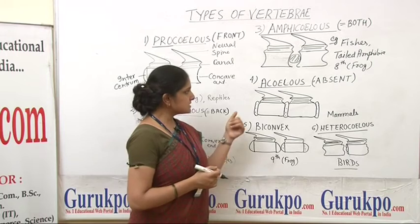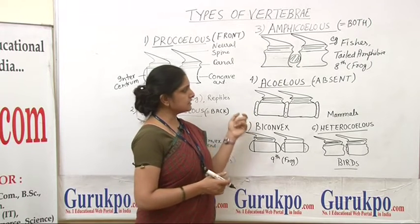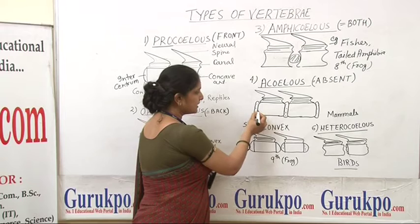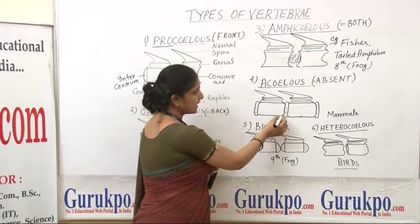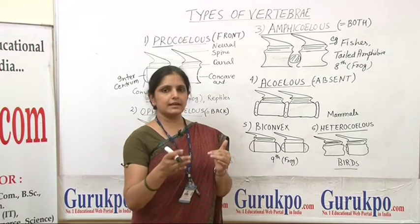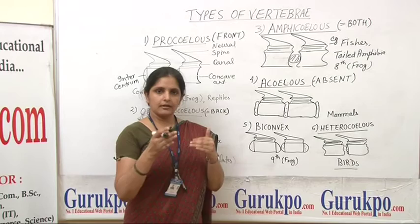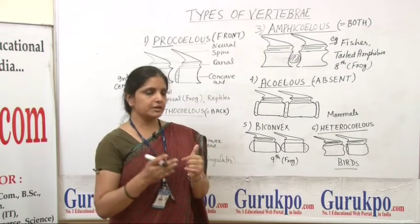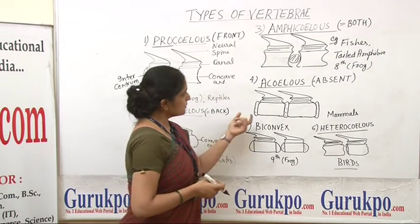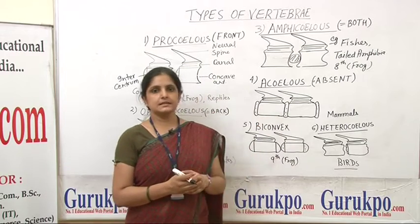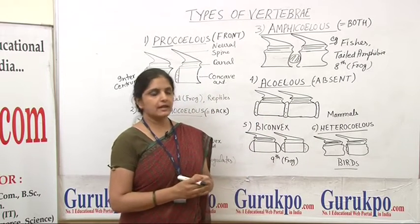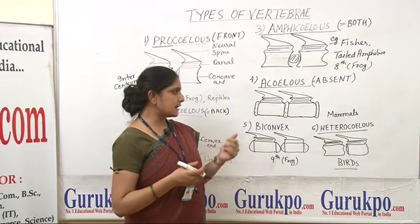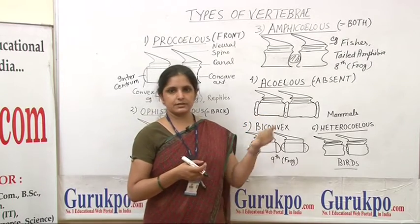There is no concavity or convexity at the end of the centrum body — the end is flat. This is called acoelous vertebrae and it is the unique characteristic of mammals. All mammals have acoelous vertebrae.